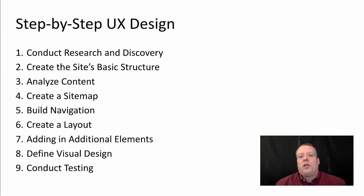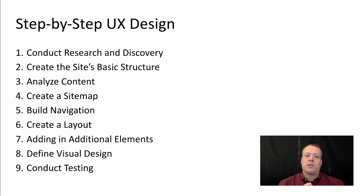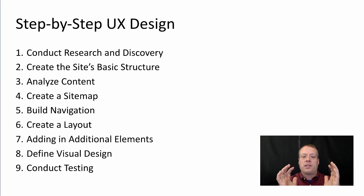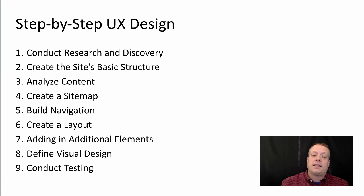In order to really think about the overall user experience, there's a natural course of steps that you can take. You can start by conducting research — we've talked about that through digital research and other aspects before. You then create a basic structure, you analyze content you already have, you create a site map, which is a description of the basic structure of the site. You build navigation features to make sure that people can get around the website. You create a layout for the actual pages themselves and you add in additional elements such as calls to action, forms, and contact information.